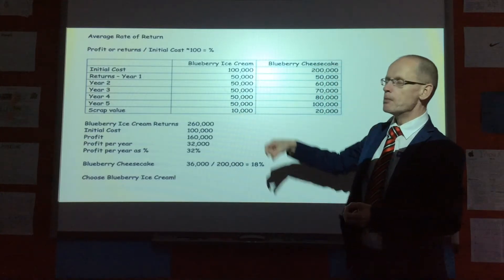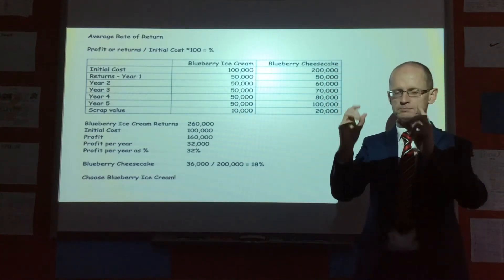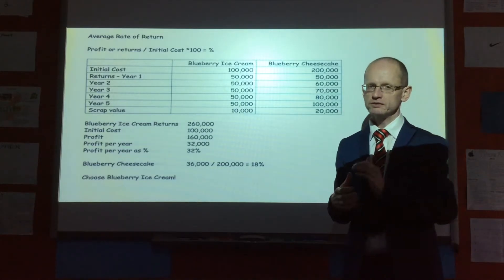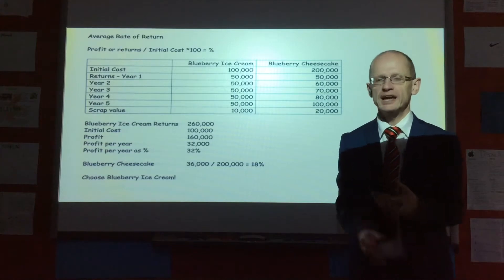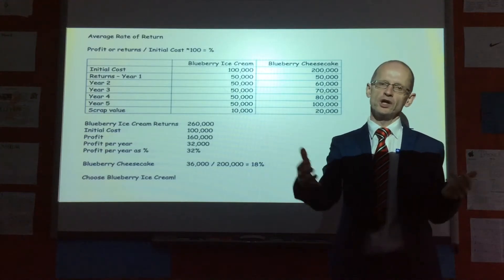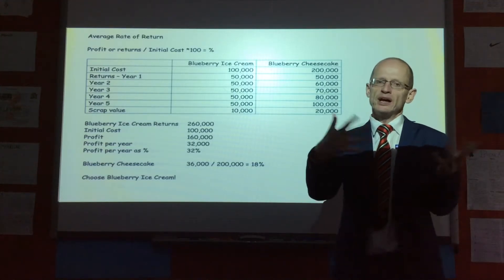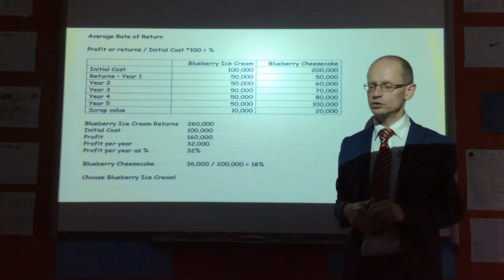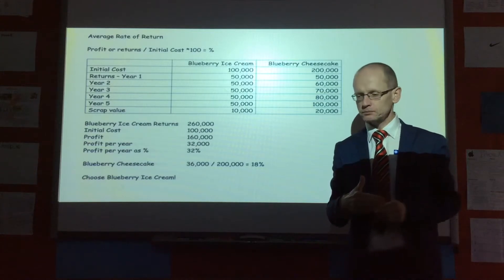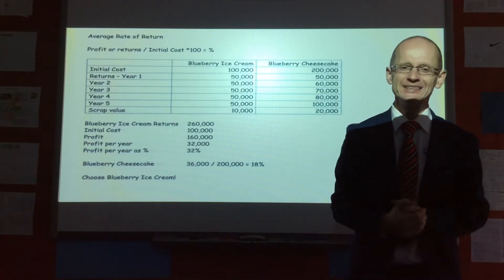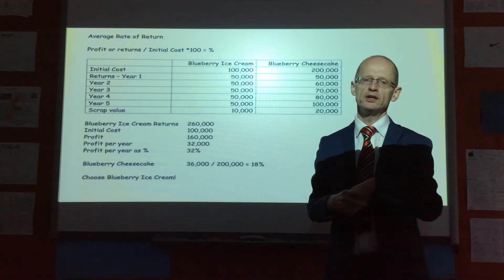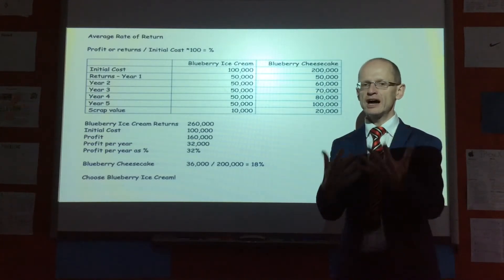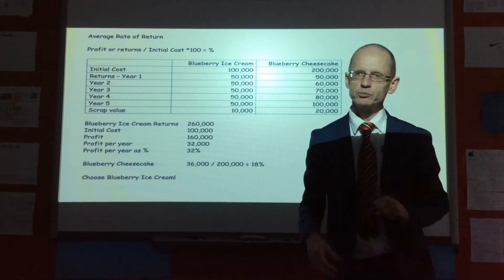In this instance again we would choose blueberry ice cream. However, money loses value over time because of inflation — $100,000 today will not be worth $100,000 in five years because prices will have risen and you can buy less. Additionally, to expand, businesses often borrow money, and there is a cost attached to borrowing called interest. The next method takes that into consideration, and that's Net Present Value.